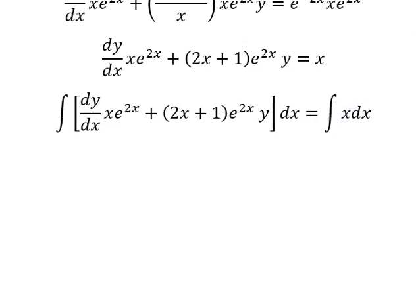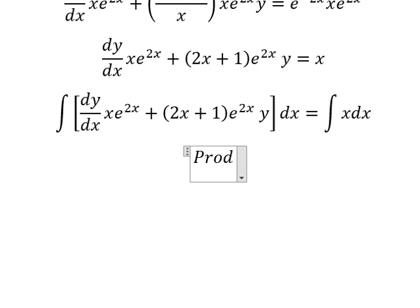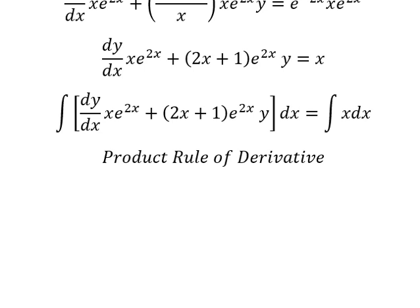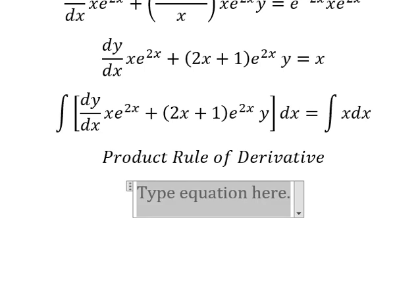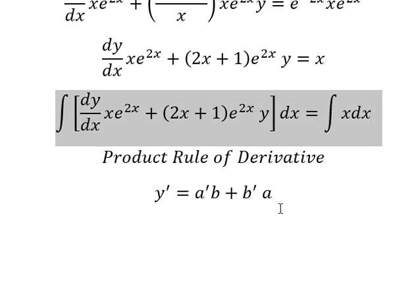Next we can use the product rule of derivatives. First derivative of a multiplied by b plus first derivative of b multiplied by a, so y equals ab.